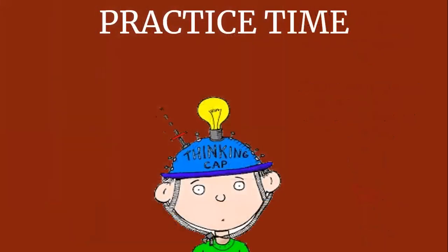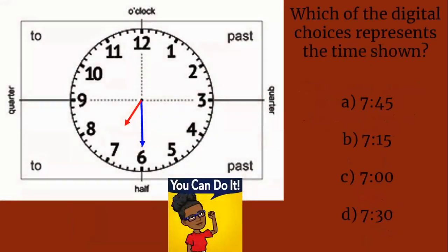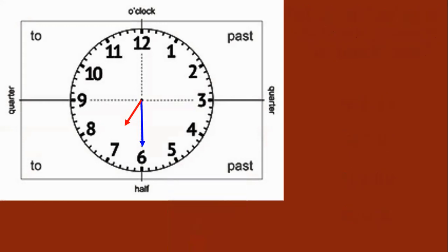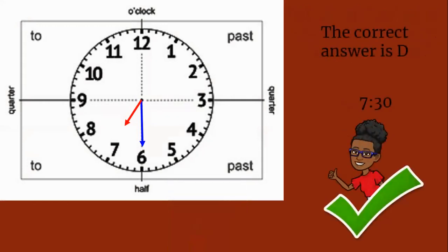Practice time. Are you ready? Which of the digital choices represents the time shown? Is it A, 7:45? B, 7:15? C, 7 o'clock? Or D, 7:30? You can do it. If you said 7:30, you were correct.